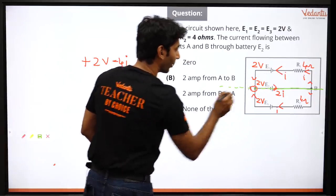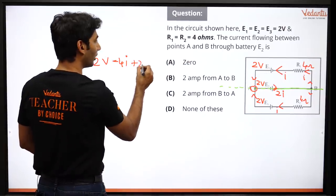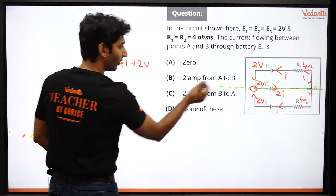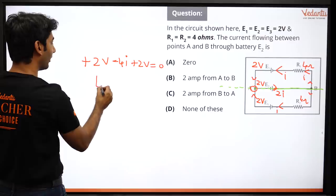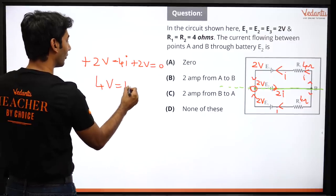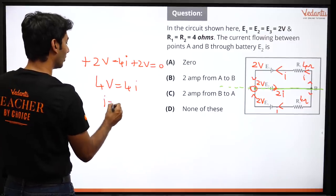From here again negative to positive so plus 2 volt and we come back here equal to 0. So what happens here, 4 volt is equal to 4i, i is equal to 1 ampere.